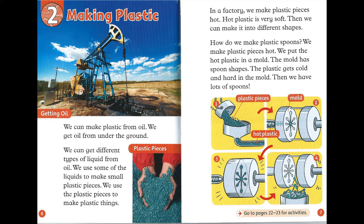Chapter 2: Making Plastic. We can make plastic from oil. We get oil from under the ground. We can get different types of liquid from oil. We use some of the liquids to make small plastic pieces. We use the plastic pieces to make plastic things.